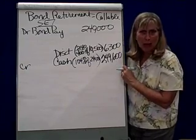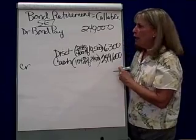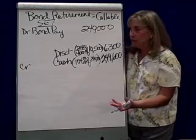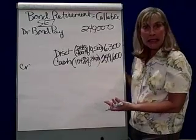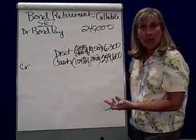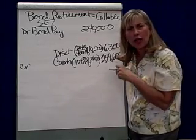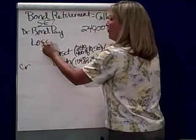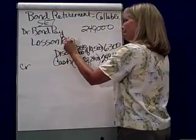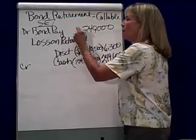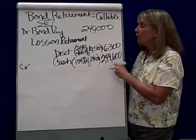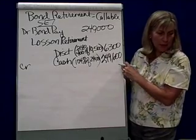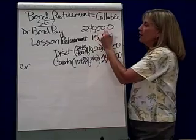Does this entry balance? No — that means I either had a gain or a loss on retirement. I need a debit, and when I need a debit, that's called a loss. So I'm going to have a loss on retirement for the plug — the difference between the debits and credits — and the loss that I am suffering is $15,900.